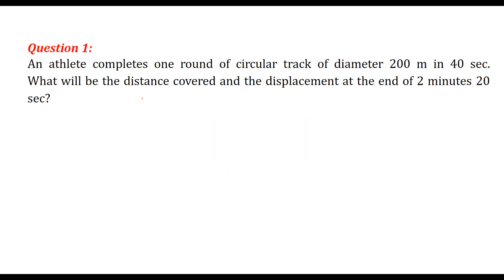We are taking question and answer on motion. An athlete completes one round of a circular track of diameter 200 meters in 40 seconds. What will be the distance covered and the displacement at the end of 2 minutes 20 seconds?